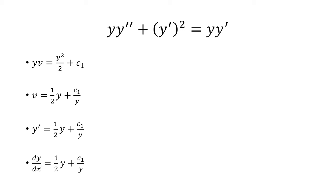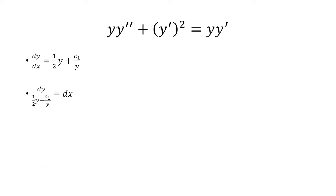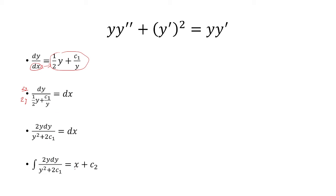So I'm going to take the right-hand side and switch spots with dx, making it separable. Next, I multiply top and bottom by 2y, so the 2 cancels and the y cancels. Now I can integrate both sides. When I integrate dx, you can think of it as 1 dx, so the antiderivative of 1 is x, plus a constant.